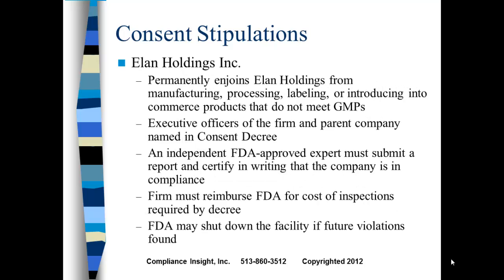Alon Holdings was permanently enjoined from manufacturing, processing, labeling, and introducing products that did not meet GMPs. Executive officers of the firm and a parent company were named in the consent decree. An independent FDA-approved expert had to submit a report and certify in writing that the company was in compliance — a significant amount of work between the third party and the company to ensure that was truly the case. The firm also had to reimburse FDA for inspection costs, and the FDA reserved the right to shut down the facility if future violations were found.